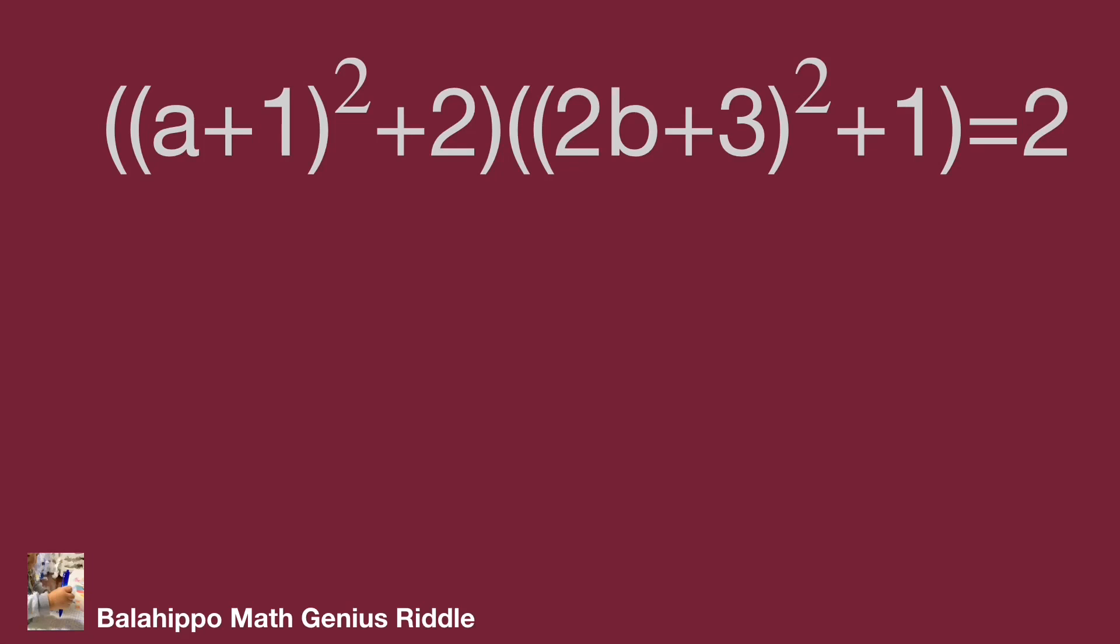Due to (a + 1)² larger or equal to 0, so (a + 1)² + 2 larger or equal to 2. The second quantity, (2b + 3)² larger or equal to 0, so (2b + 3)² + 1 larger or equal to 1.